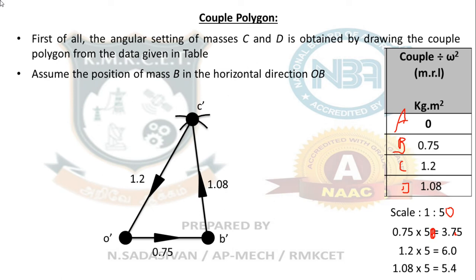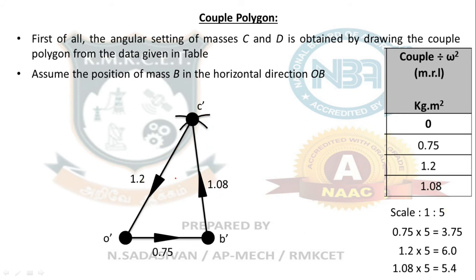Now, why are the arrow marks in the same sense? Normally for a closing side we use the opposite sense, but here the question states the shaft is in complete balance — no external balancing mass is needed; it is in complete balance by itself. Therefore, arrow marks should all be in the same direction. This is the key point: if a question carries the words 'shaft is in complete balance,' do not draw opposite-direction arrow marks — everything is in the same direction.